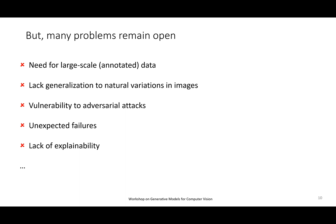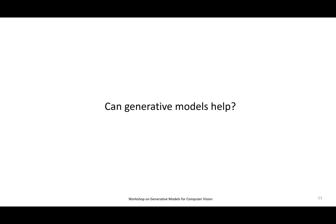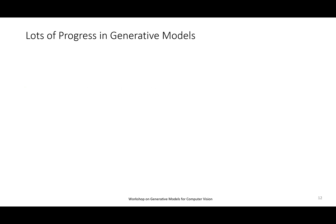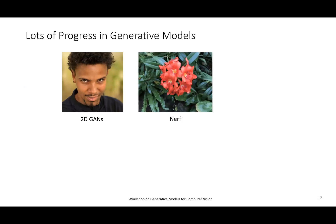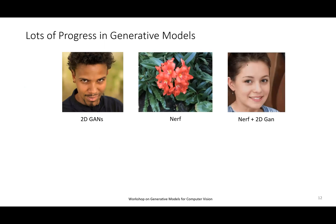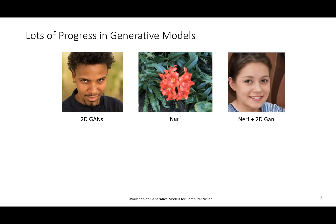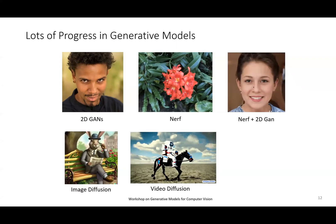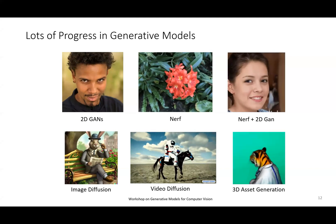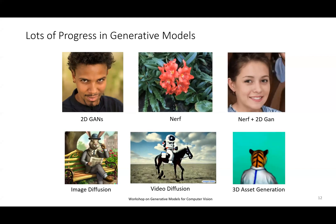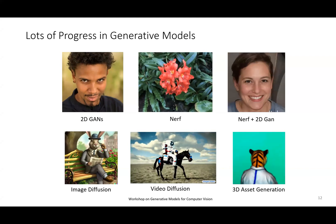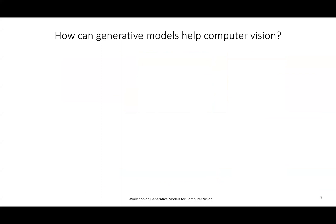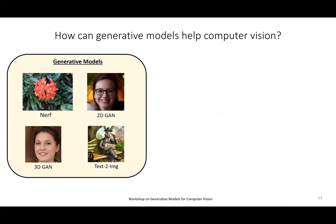That's the starting point of this workshop. The central question is: can generative models help us resolve some of those issues? We've seen lots of progress in generative models — classic 2D GANs, NeRFs, models that combine NeRF and GANs into 3D-aware GANs, latent diffusion models, video generation from text, and 3D asset generation from text. All of these advances happened over the last few years and raised the question: can this help computer vision? I think it's not a question of if it can help, but how it can help. That's at the center of this workshop.